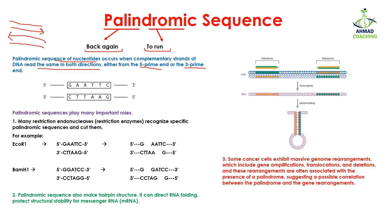For example, here I have a sequence from 5 prime to 3 prime which is G-A-A-T-T-C. When reading in this direction it is like this, and if you read it from the reverse direction you can see it gives the same sequence. So whether you read it from this direction or the reverse direction, they have the same sequence — you are running back again. That is why we call these the palindromic sequences.